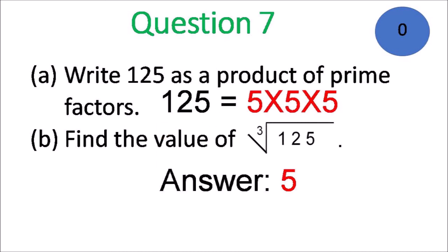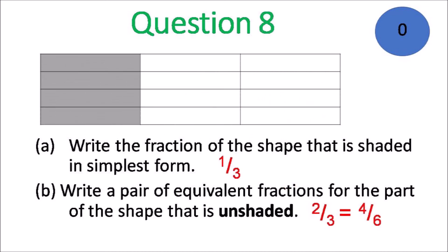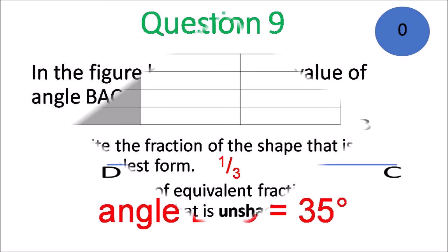Question 7: as a product of prime factors, 125 is 5 times 5 times 5. The cube root of 125 is 5. Question 8: the shaded part is 4 twelfths, which simplifies to one-third, and the unshaded is two-thirds. You can write it as four-sixths as an equivalent fraction.